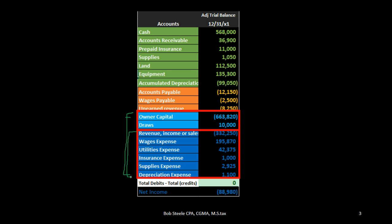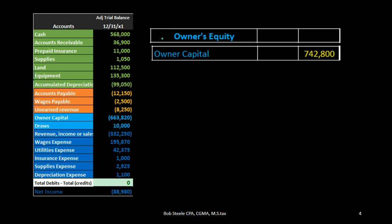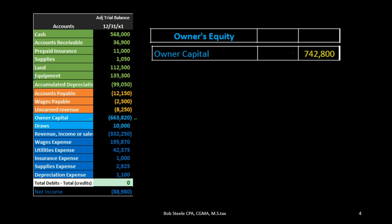In terms of the balance sheet, we can represent all these blue accounts as basically one part of the balance sheet — the equity section. Therefore, under the equity section we only have one account: the owner's capital account.